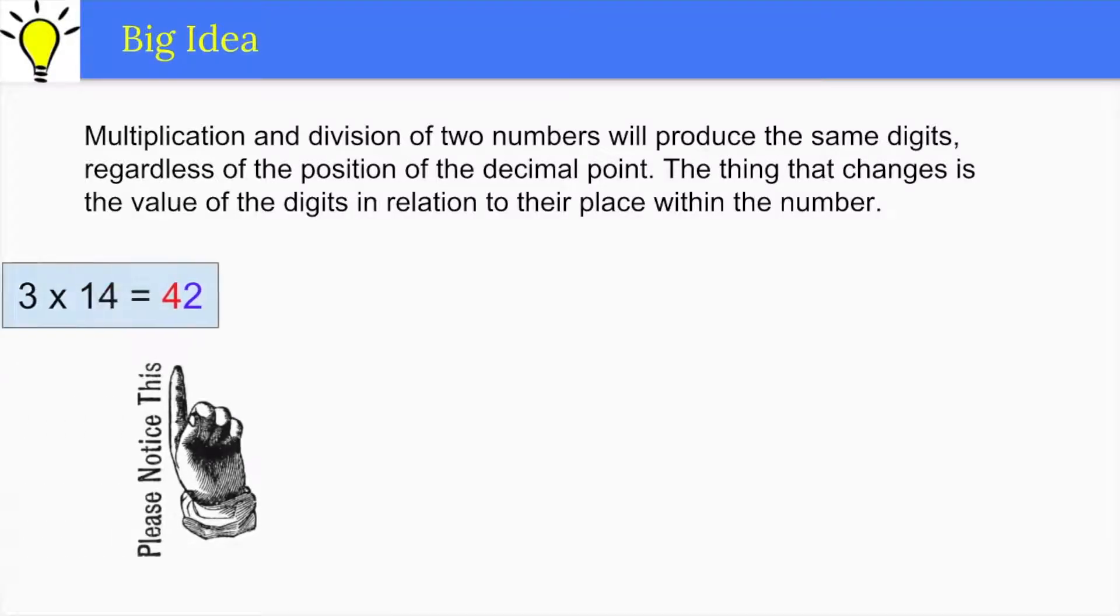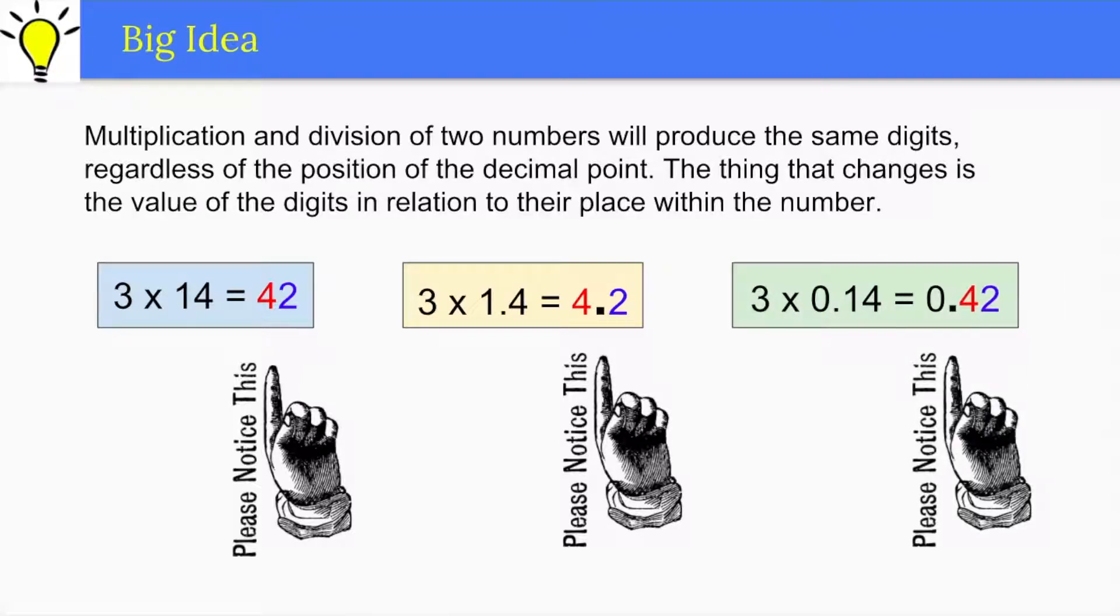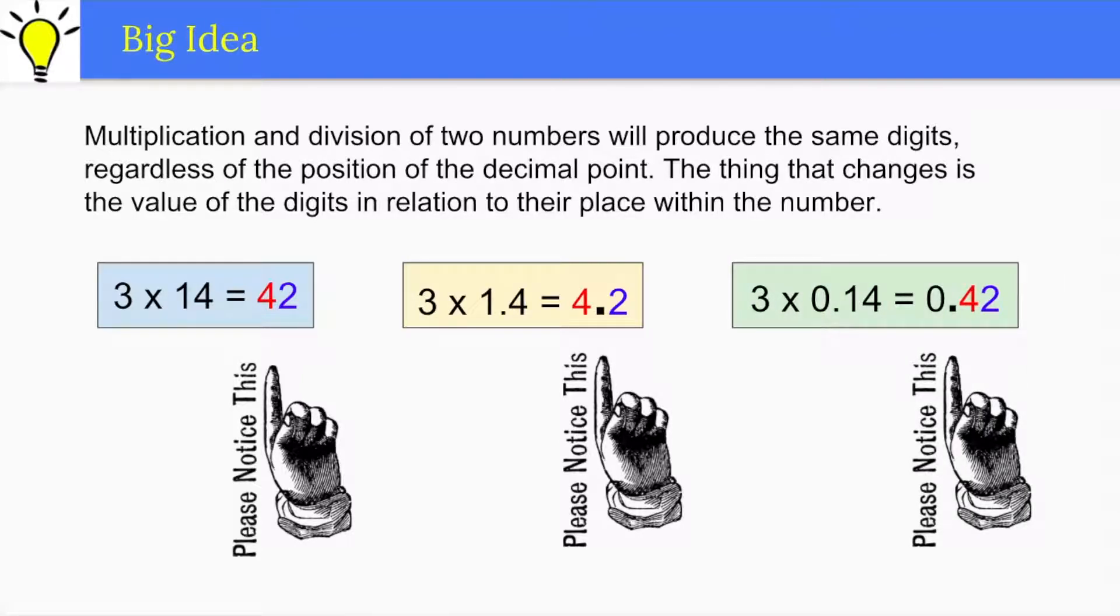For example, students use their understanding of place value to find patterns in the placement of the decimal point in the product when multiplying decimals. The math talks in this unit are a great way to develop students' ability to do mental multiplication and division of decimal numbers and help them notice such patterns.